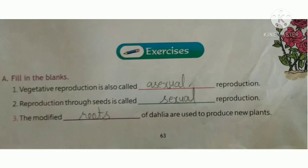Vegetative reproduction is also called asexual reproduction. Question number 2, reproduction through seeds is called sexual reproduction. Question number 3, the modified roots of dahlia are used to produce new plants.